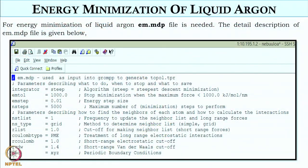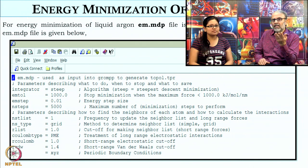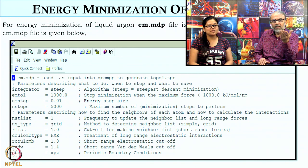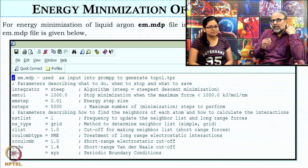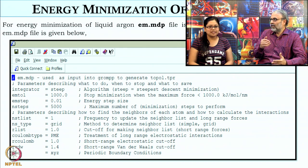For energy minimization, we need an MDP file. MDP stands for Molecular Dynamics Parameter file, and it contains all the information which is needed. For energy minimization, we will need EM.MDP. The MDP file has many more parameters than the earlier files — for example, the algorithm we want to use for minimizing the energy, the total number of steps required, and a time step like 0.01.